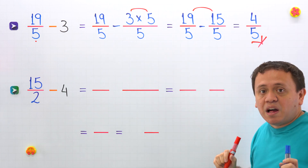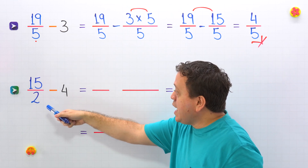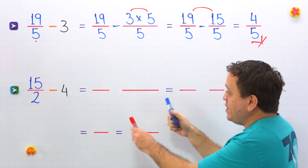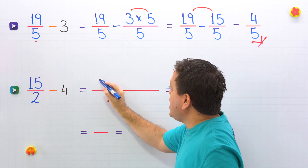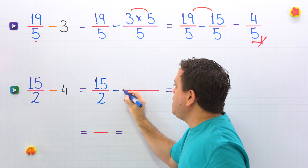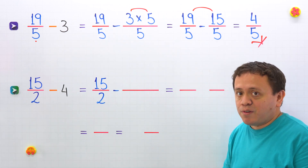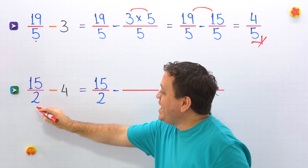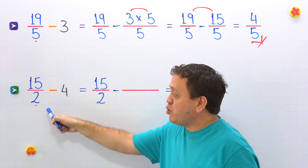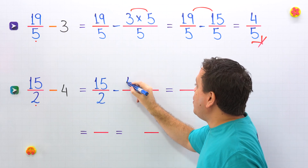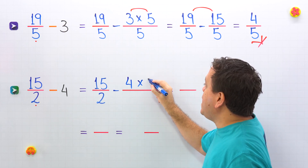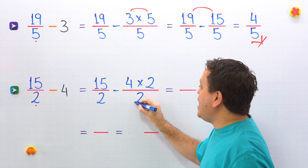Let's continue with the second example. In this example, we are going to subtract 15 halves minus 4. Once again, we have a fraction and a whole number. To find the difference, first we copy the fraction — 15 halves. We already know that the key is to focus on the denominator of the fraction, 2 in this case. So we convert the whole number 4 to a fraction with a denominator of 2.